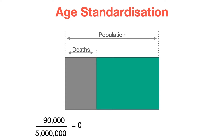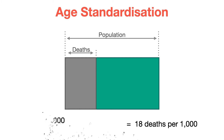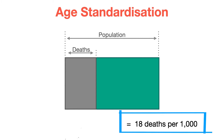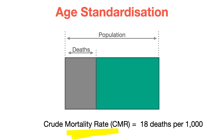The mortality rate is the proportion of that population that die. So in this case, 90,000 people over 5 million people, and it's convention to multiply that by 1,000 and then report the number as deaths per 1,000 population. So in this case, it's 18 deaths per 1,000 population, and we call that the crude mortality rate.